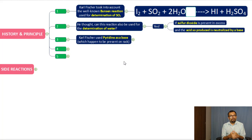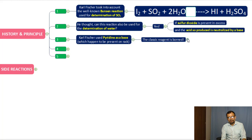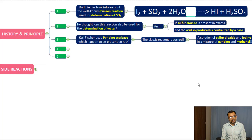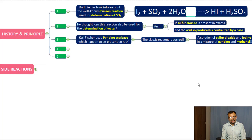Karl Fischer used pyridine as the base molecule to neutralize the acid generated, and the classic reagent was born: a solution of sulfur dioxide and iodine in a mixture of pyridine and methanol. These four constituents create the reagent which is popularly known as the KF reagent.